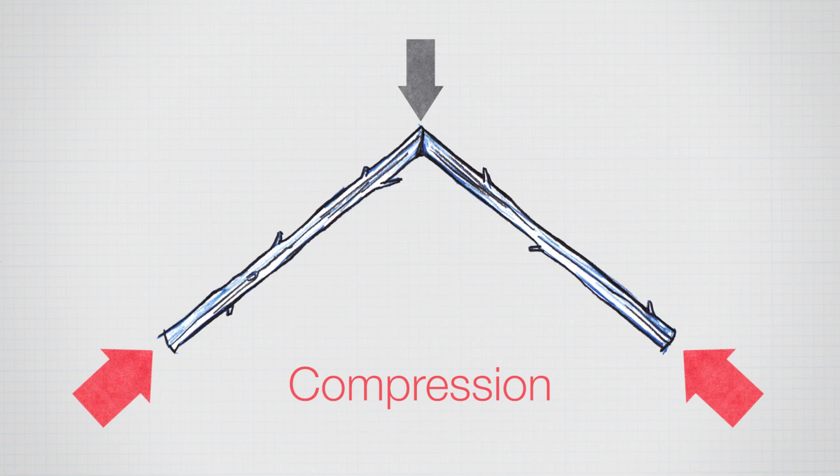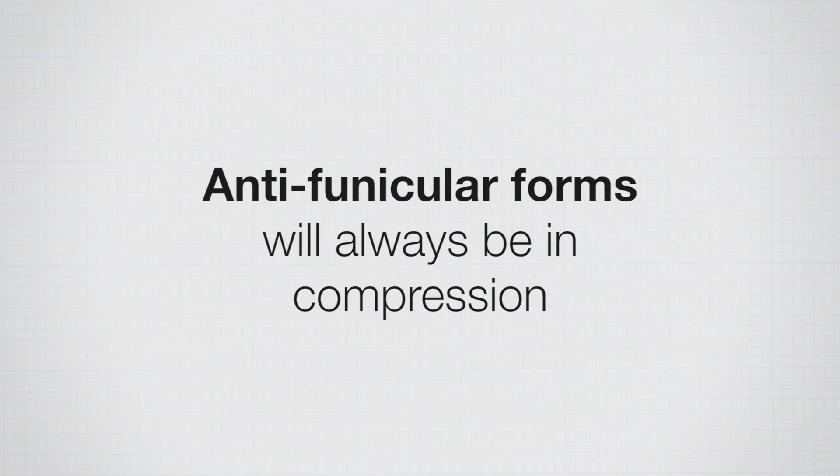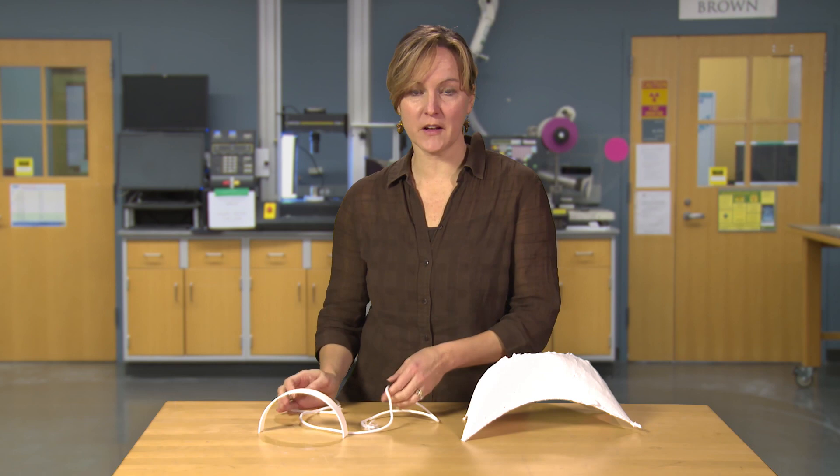So the entire form of an anti-funicular form, whether it's an arch or a three-dimensional form, will be in compression. Because it's in compression, anti-funicular forms can't be made out of ropes anymore, because we can't push on them.